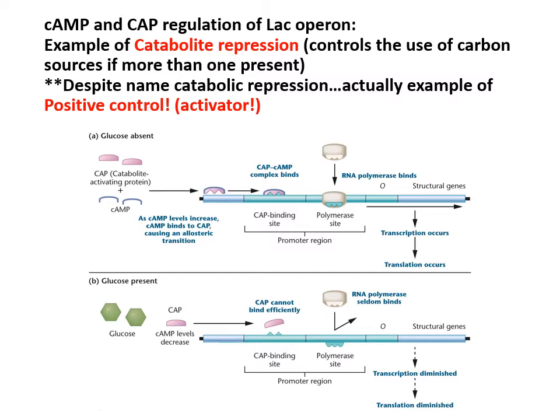The way you can think of it is the operon basically thinks that if someone's wearing a cap, they're very attractive, and so it will activate the lac operon. If CAP is present and binding, the polymerase works really well — it binds very efficiently and you get very good transcription. If CAP is not bound to the lac operon right before it, the polymerase will not be able to bind well to the promoter, so you won't get strong transcription.